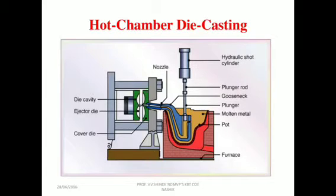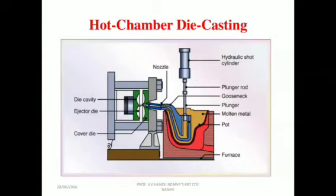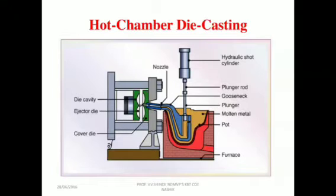Hot chamber die casting can be used with zinc, magnesium, and other low melting point alloys, using either proprietary multi-slide or conventional tooling. The hot chamber machine contains a melting pot, whereas the cold chamber differs — in the hot chamber machine itself consists of a furnace.